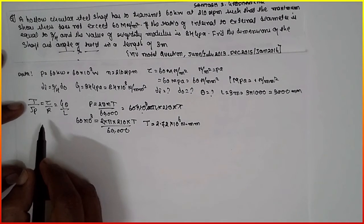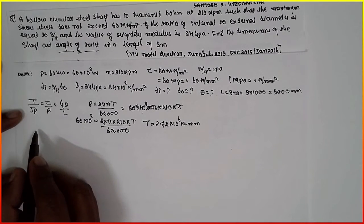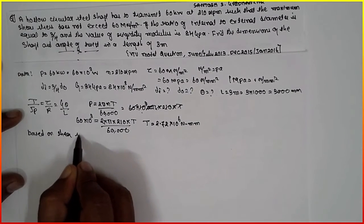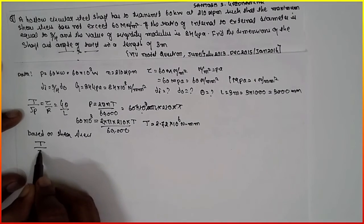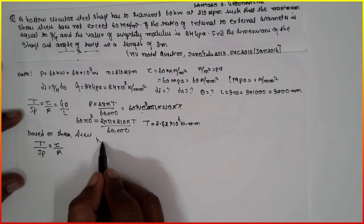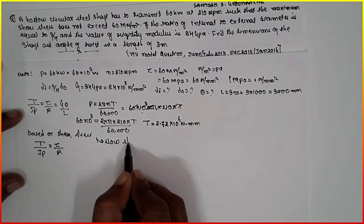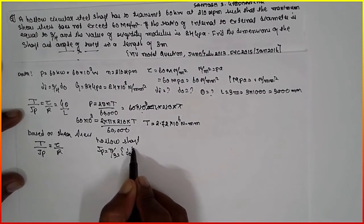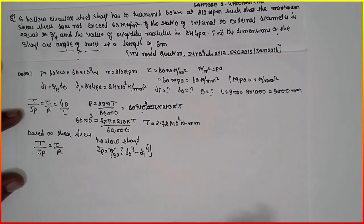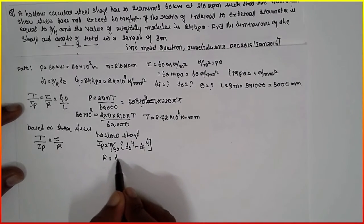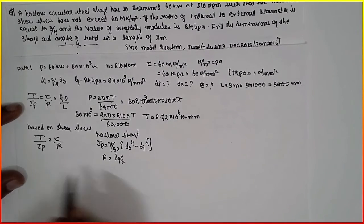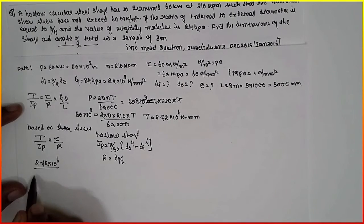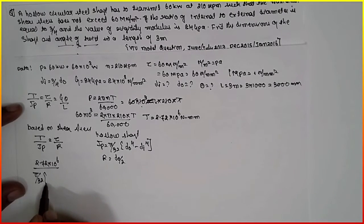Now we have to find out the dimensions. I will consider these two based upon the shear stress. T divided by Jp is equal to tau divided by R. It is a hollow shaft. The polar moment will be Jp equals pi by 32 times D0 raised to 4 minus Di raised to 4, and R will be D0 by 2, outer diameter divided by 2.